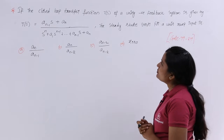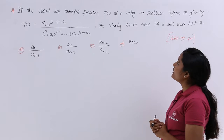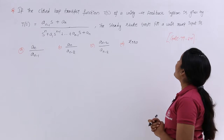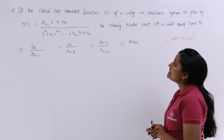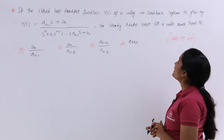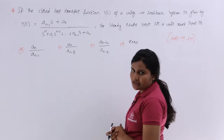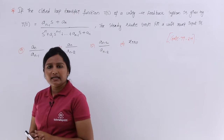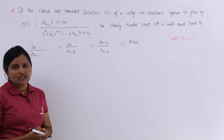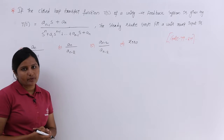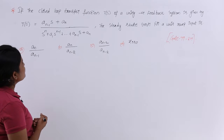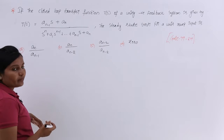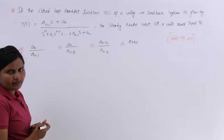If the closed loop transfer function T(s) of a unity negative feedback system is given as T(s) = (A_{n-1} * S + A_n) / S^N and so on, they are asking: what is the steady state error when the input is unit ramp?